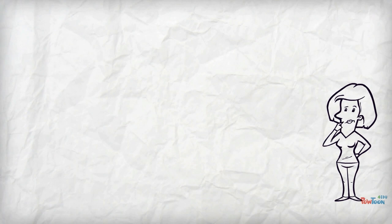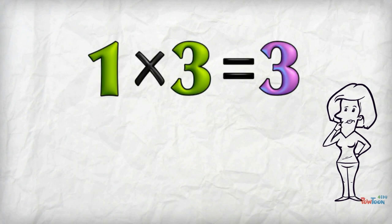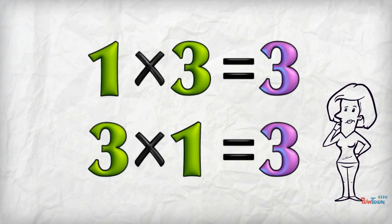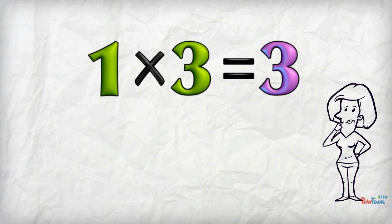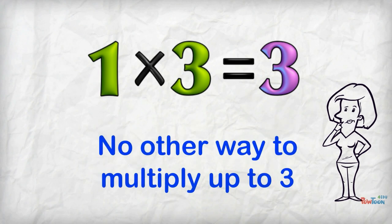Well, I can say 1 times 3 is 3, or 3 times 1 is 3. There is no other way to multiply up to 3 using natural numbers.